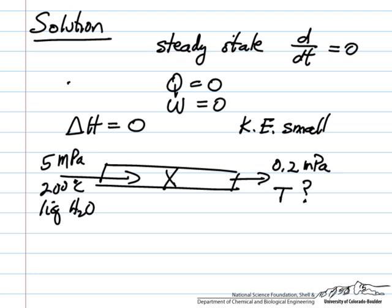So we have this pressure drop across the throttle. Let's call the inlet 1, the outlet 2. The first law reduces to H1 equals H2.